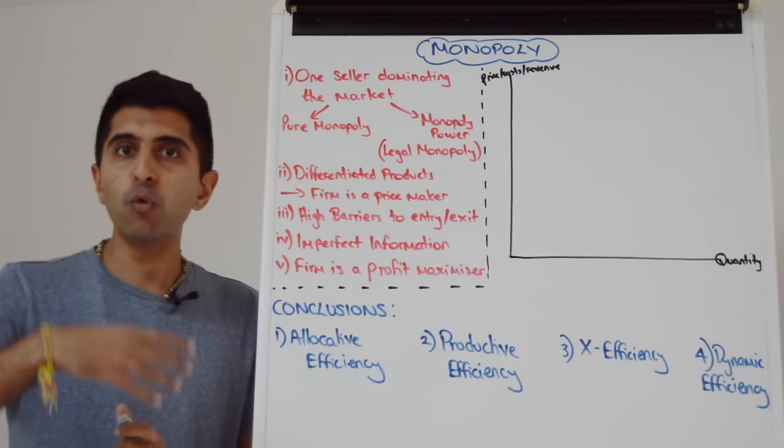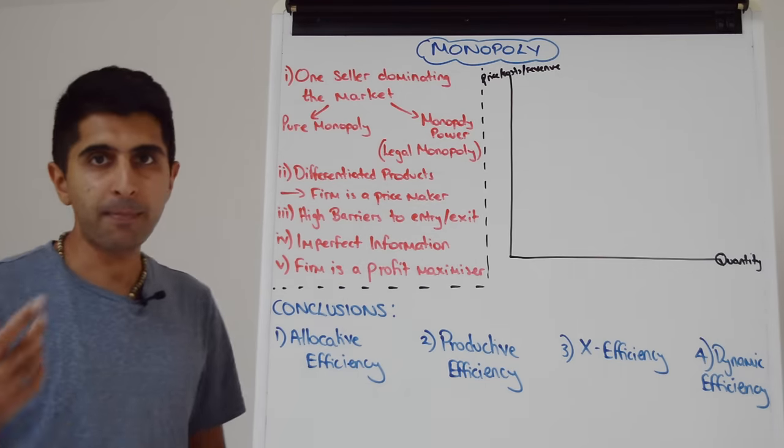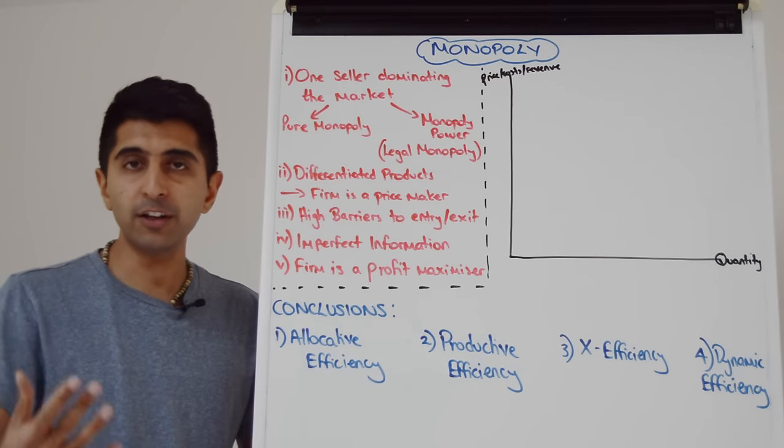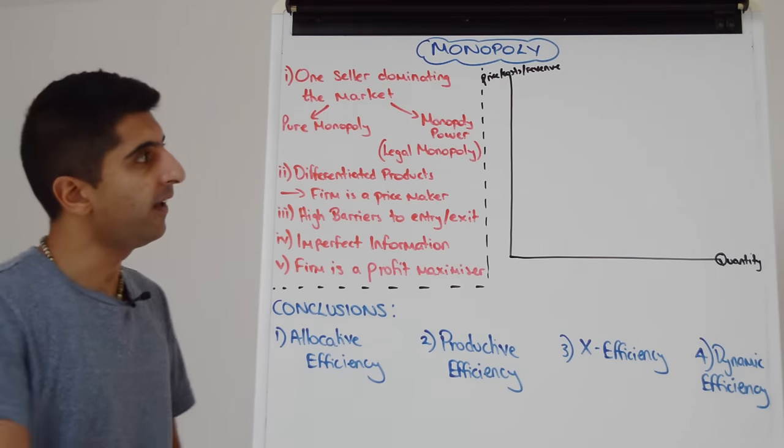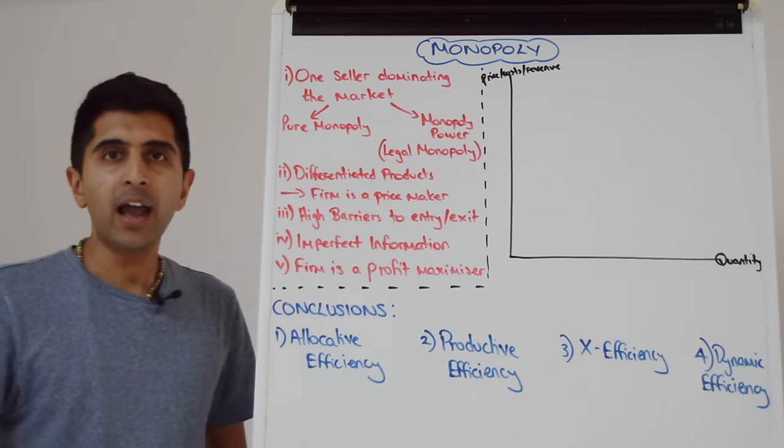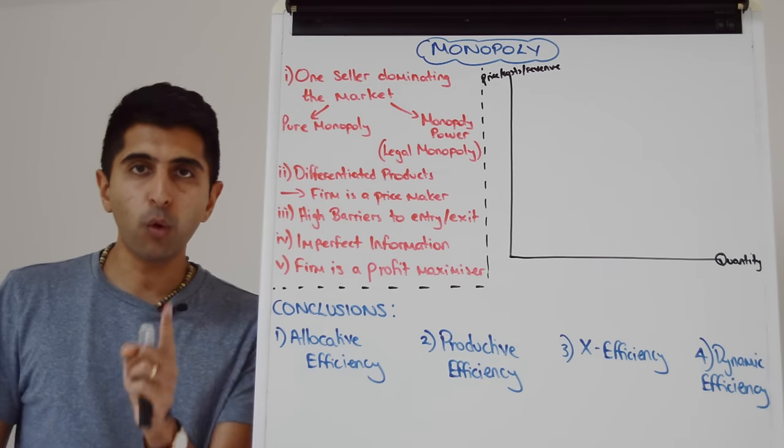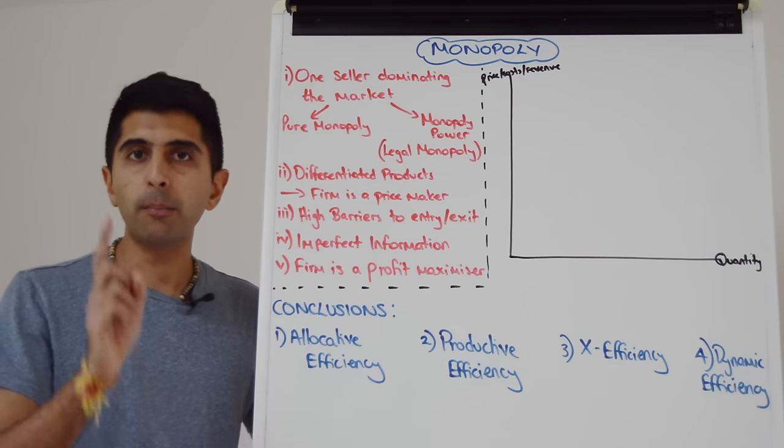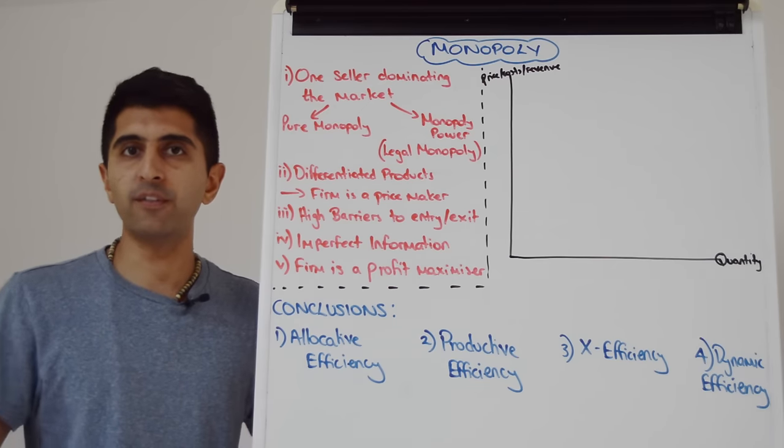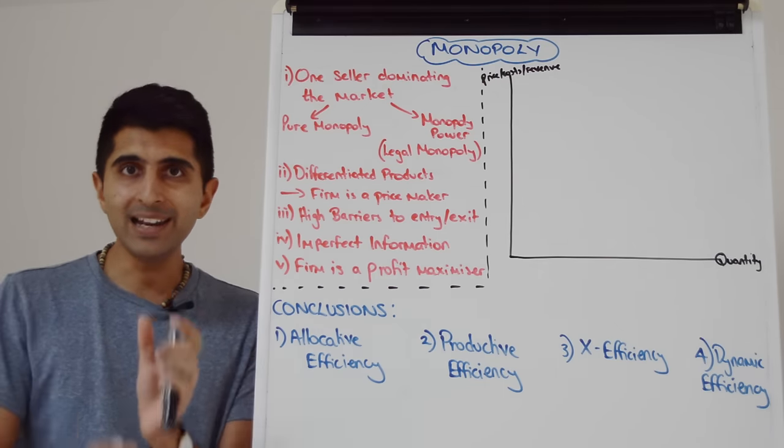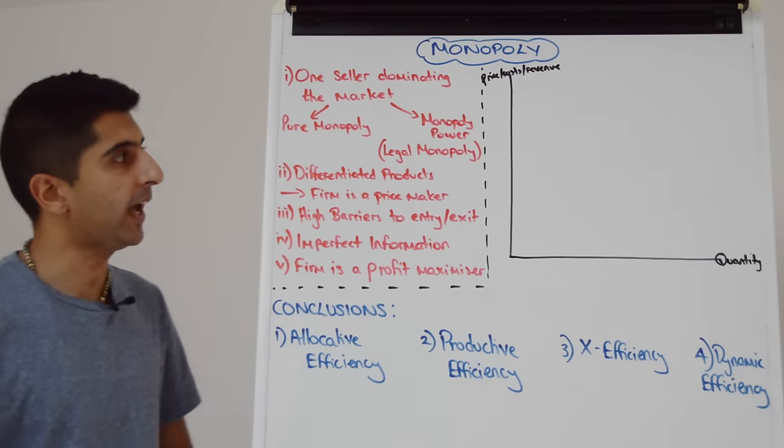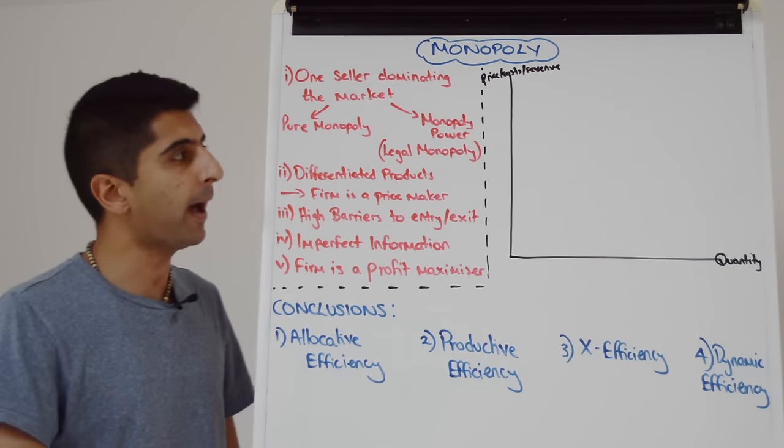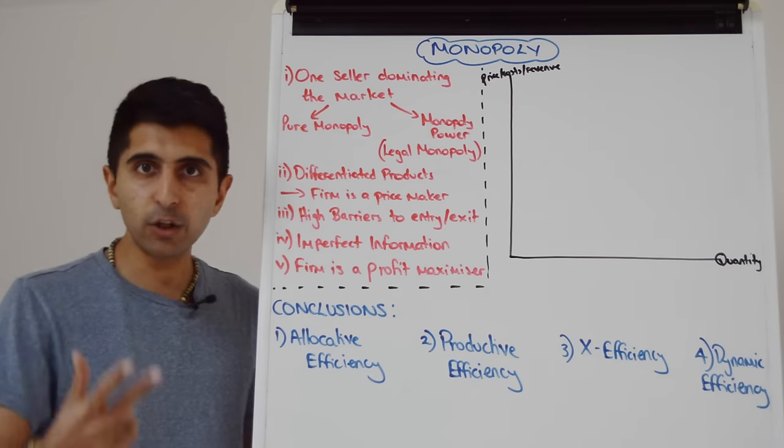Or we can look at it in a more realistic sense of monopoly power, where a firm has got the power, has got the potential to act like a monopoly. That's known as monopoly power, and the legal definition of that is when one firm on their own has got more than 25% control of the market. So one firm has got at least 25% market share, they're considered to have monopoly power. This is also known as a legal monopoly.